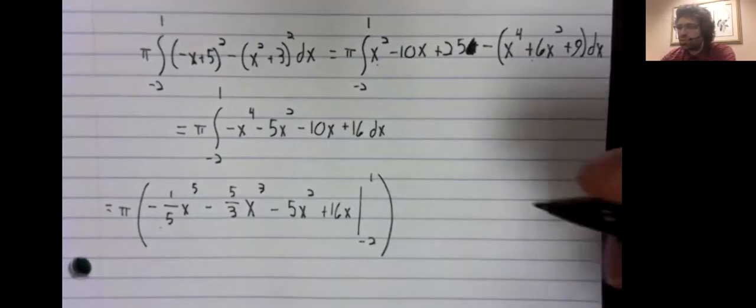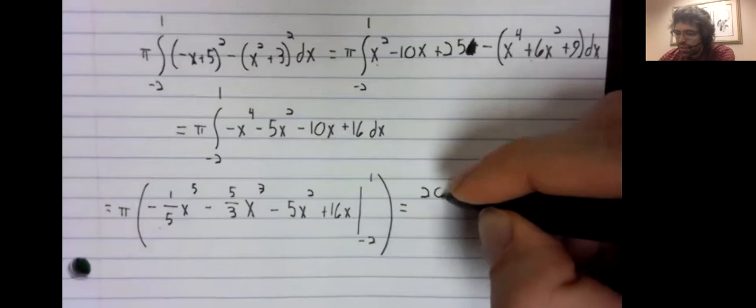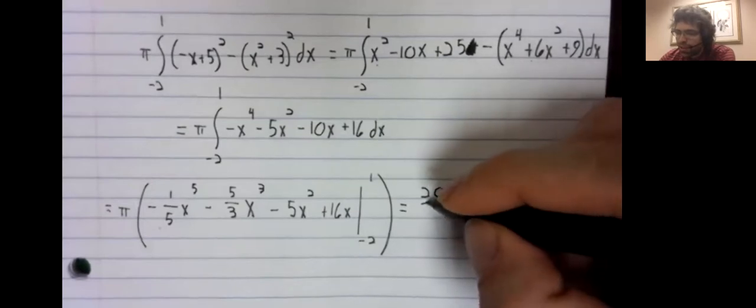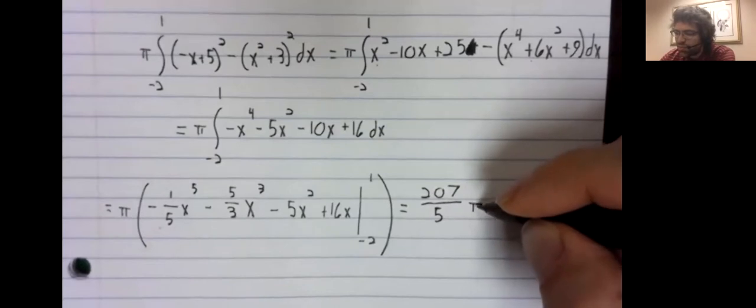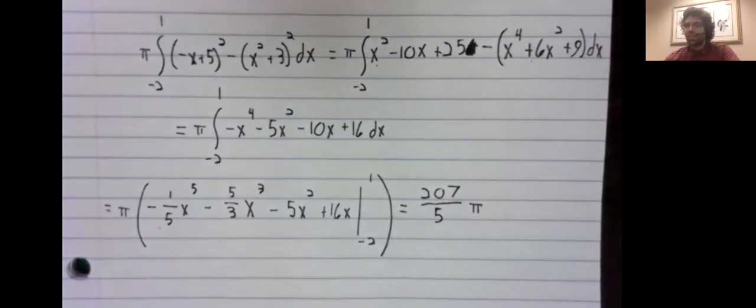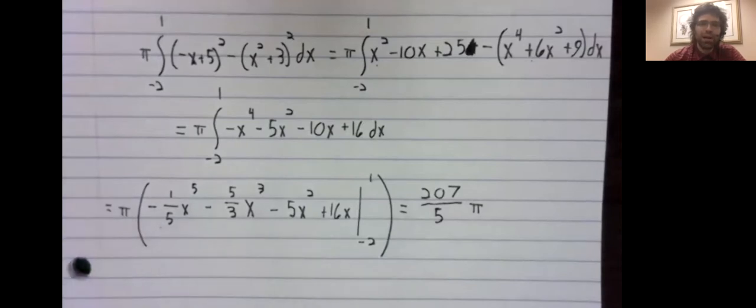I think we will elide that and just give the answer: 207 divided by five times pi.